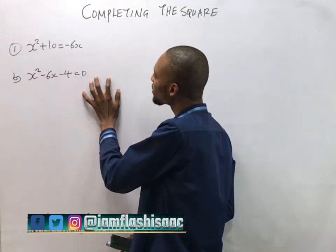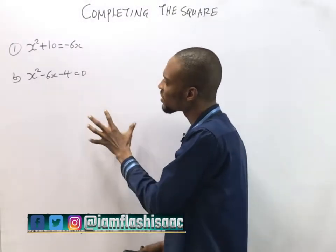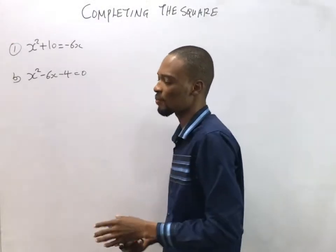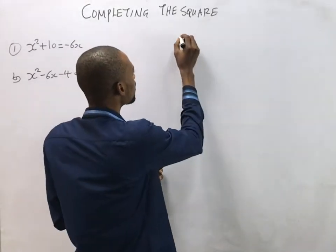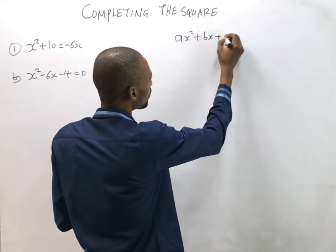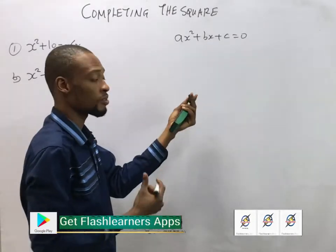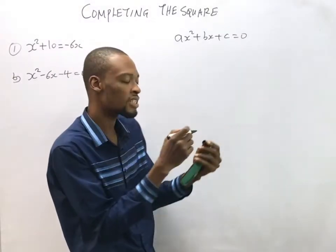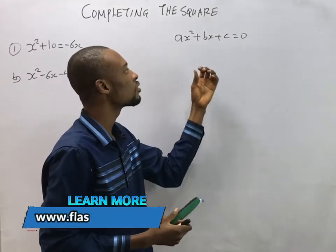Completing the square method is not as difficult as you think, and it's even one of the easiest ways to solve quadratic equations. The standard form for every quadratic equation is as² + bs + c = 0, where a, b, and c are known values, and s is the variable we need to find.